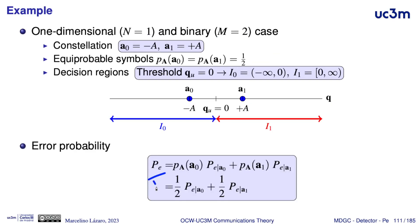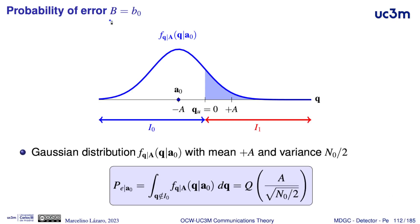The symbol error rate is obtained by averaging the conditional probability of error when we transmit A0 and the conditional probability of error when we transmit A1. If we transmit the first symbol A0, its vector representation, the conditional distribution of the observation given that we transmit this symbol is a Gaussian whose mean is the vector A0, in this case minus A. We need to integrate this Gaussian distribution outside the decision region of A0 — that is, we integrate it over the decision region of A1.